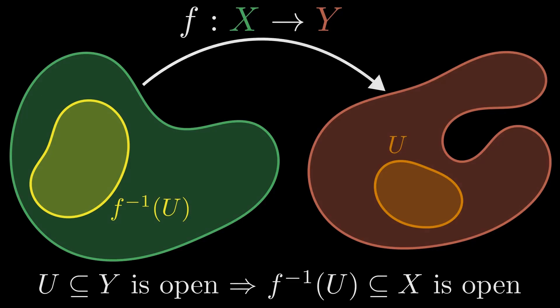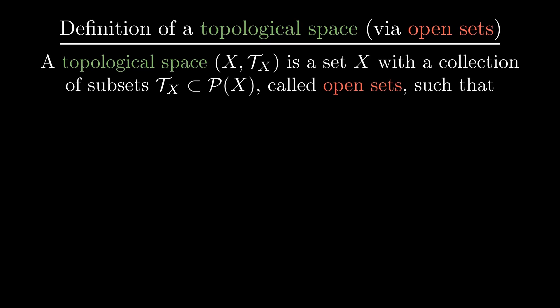For everywhere continuous functions, we only need to know about open sets. So we can alternatively define a topological space by specifying its open sets directly.